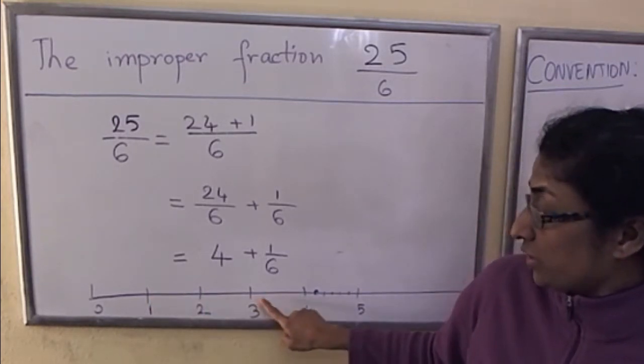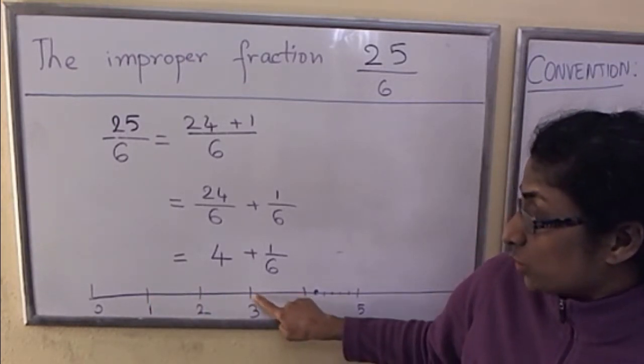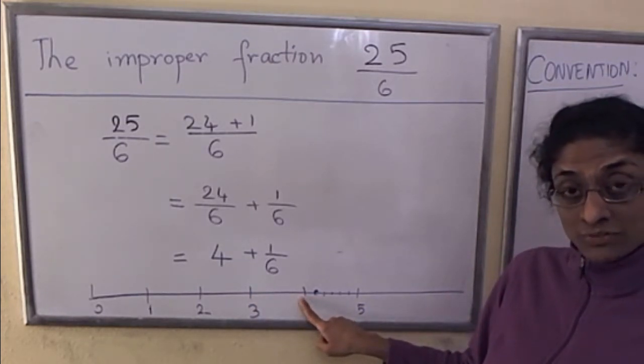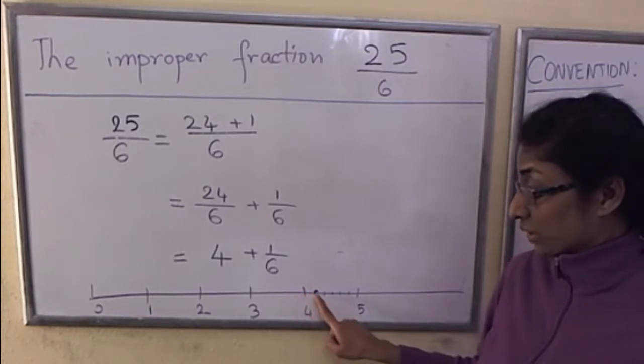12 over 6 would be this point. 18 over 6 would be this point 3. 24 over 6 would be this point.